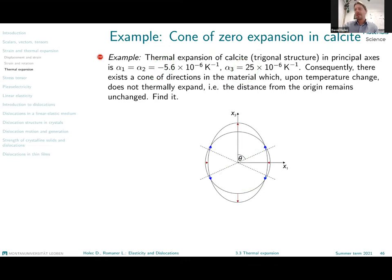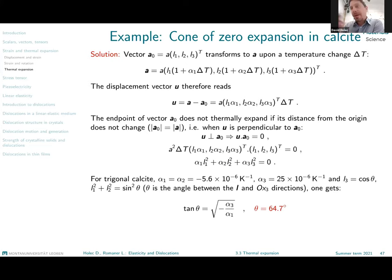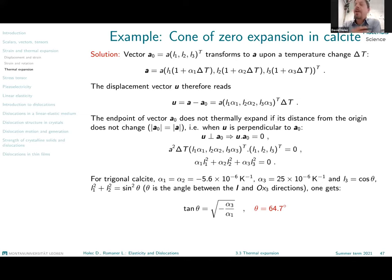Here is an example of how to calculate the cone of zero expansion for calcite, which has a trigonal structure — essentially representing a hexagonal structure — with the thermal expansion coefficients as given. Defining one angle as the deviation from the special hexagonal axis x3, we can find how far from that axis the points on the cone of zero expansion are located. The solution is given on this slide.